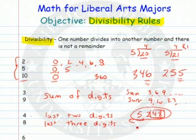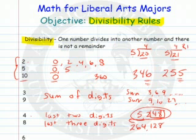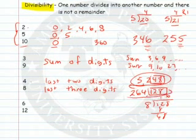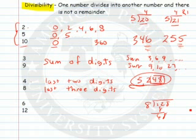The rule for 8 is based on the last three digits of the number — it doesn't matter what precedes them. So let's take 264,128. The last three digits are 1, 2, and 8 — the number 128. Does 8 go into 128 without a remainder? Yes, it does. So the number 264,128 is divisible by 8.